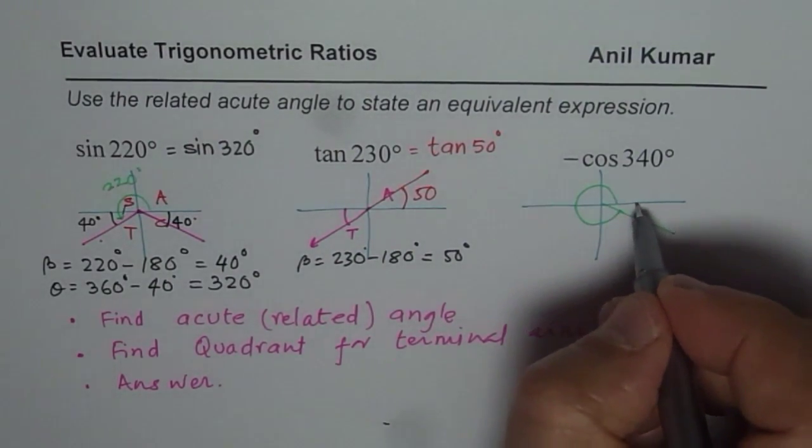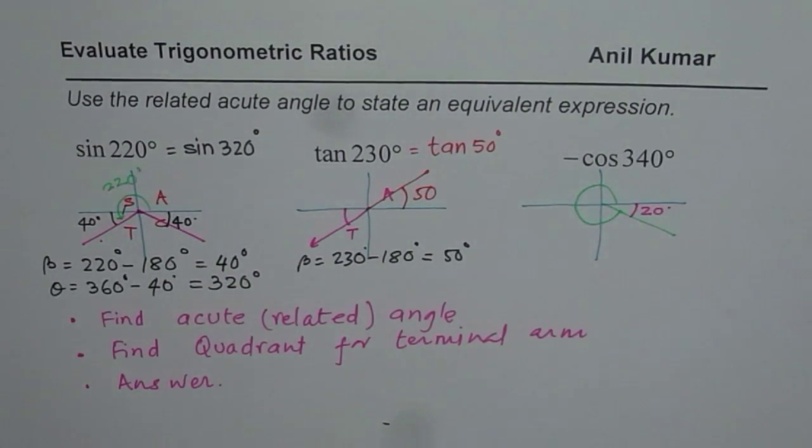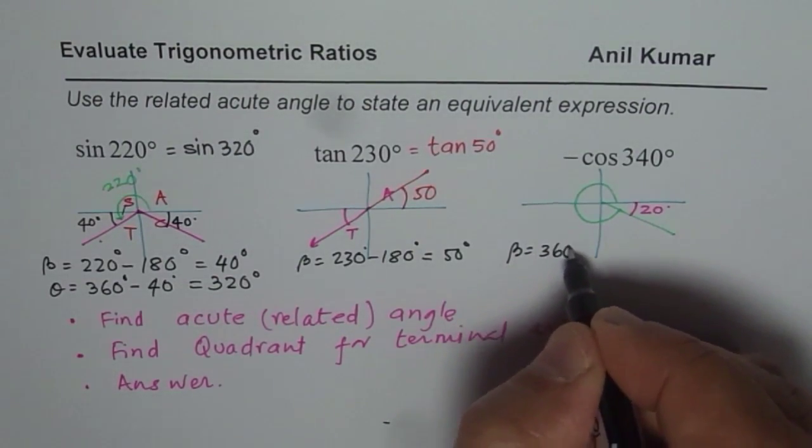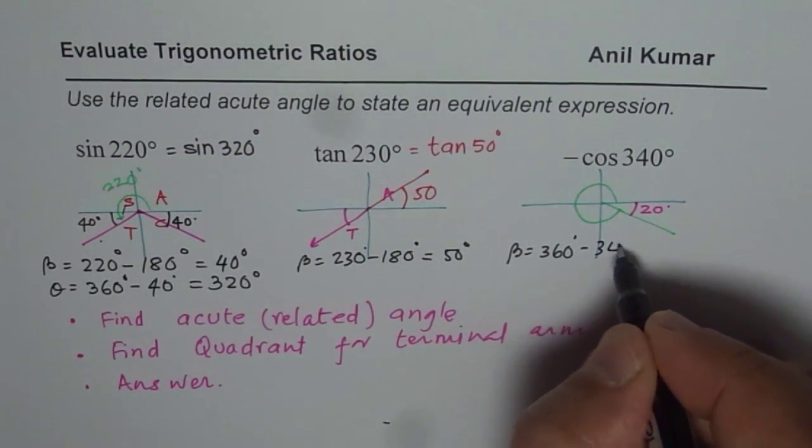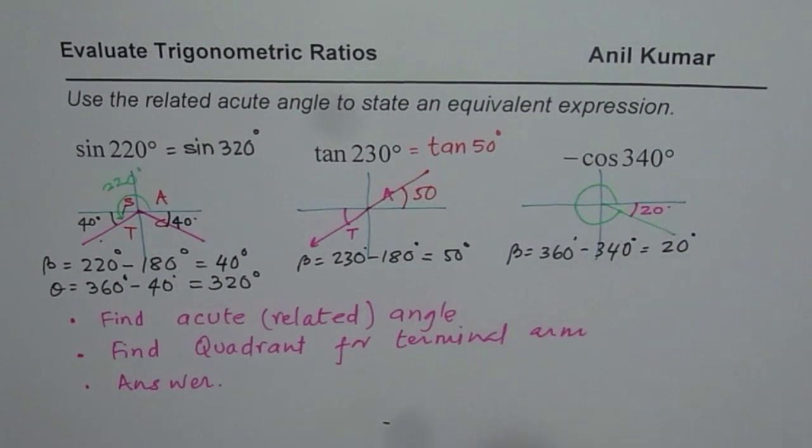So that is 340 degrees. So when we go 340 degrees, we are left with 20 degrees as the acute angle. So we can say the acute angle beta for us is 360 degrees minus 340 degrees which is 20 degrees. So the acute angle is 20 degrees.